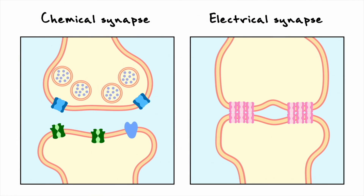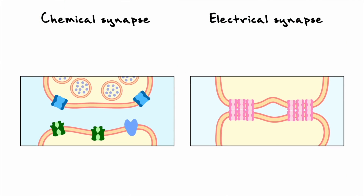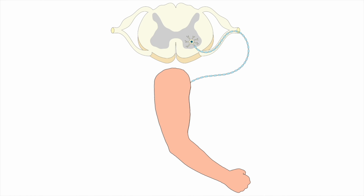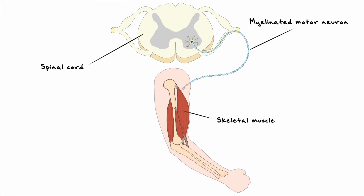Based on what we've covered, comparing the two synapse types shows they are very different with their respective nuances. We will not extensively return to electrical synapses, as they are less utilized in the body than chemical synapses, and this introduction covers the bulk of what is known about them. With that said, let's get better insight into chemical synapses by considering the synapse between the motor neuron coming out of the spinal cord and the skeletal muscle it innervates.